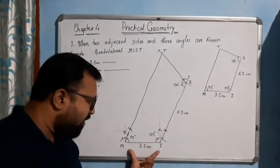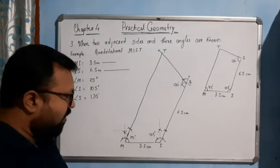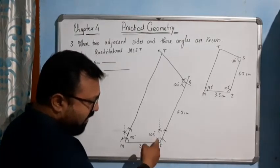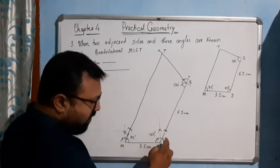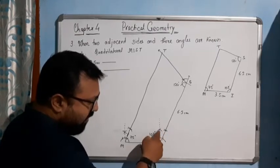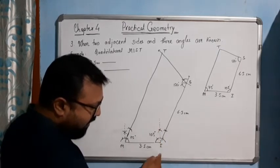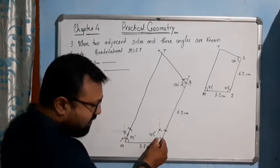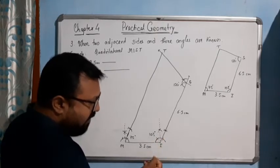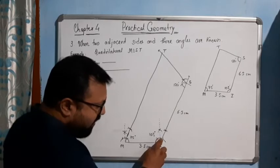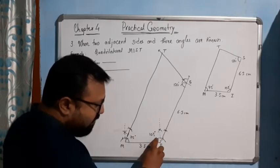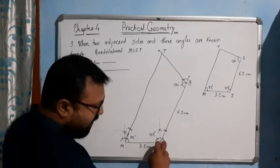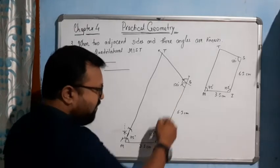Let me summarize. Draw line MI equal to 3.5 cm. To find 105 degrees at I: place the pin, draw an arc, then mark first arc at 60 degrees, then another arc at 60 degrees — giving 120 degrees. From the two intersecting arc points, draw arcs to get 90 degrees. Then divide the 30-degree portion into half to get 15 degrees. So 60 plus 30 plus 15 gives 105 degrees. Join this line — it gives you 105 degrees.